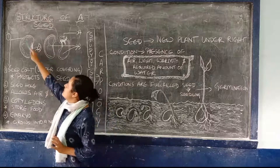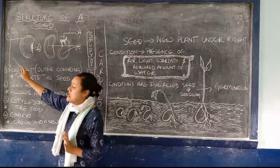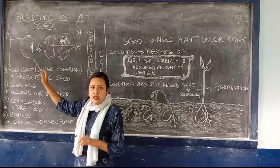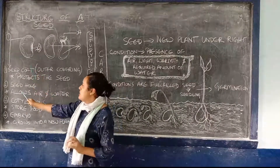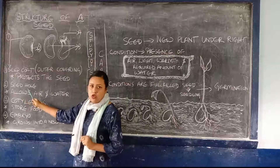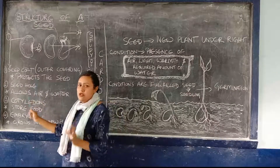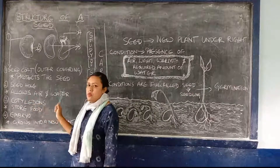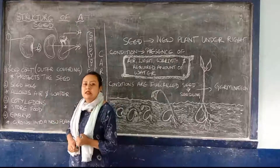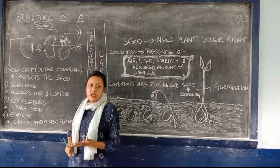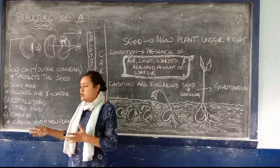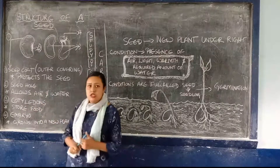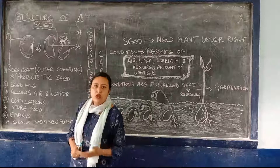The outer one, number one, you can see that — that is the seed coat. And you can see this number two structure — it is a small hole-like structure present there. It is known as the seed hole. And this seed hole, the function of it is that it allows air and water to enter into the seed. You all know a seed is a living thing, so it needs water and air also. So this seed hole allows the entry of air and water into the seed for proper growth.